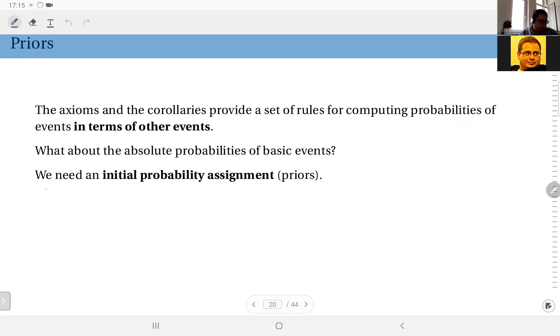So at this point, we need an initial probability assignment, which we call priors. This is essentially an assumption. This is your choice, an assignment you make.